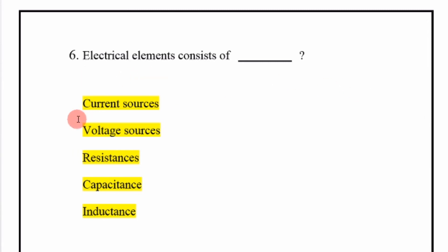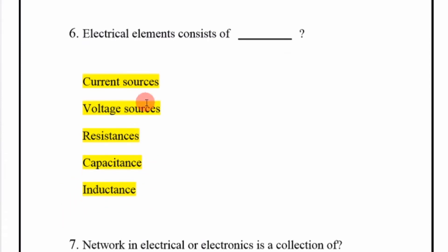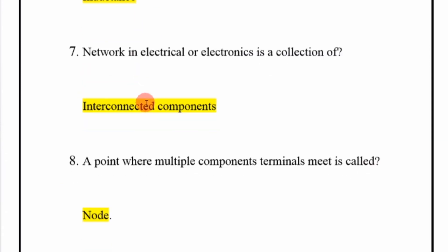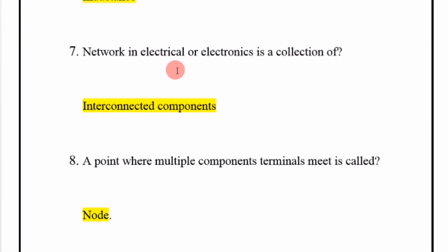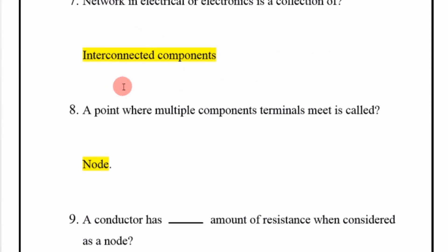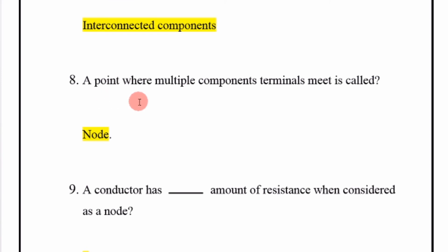Electrical elements consist of current sources, voltage sources, resistance, capacitance, and inductance. A network in electrical or electronics is a collection of interconnected components.